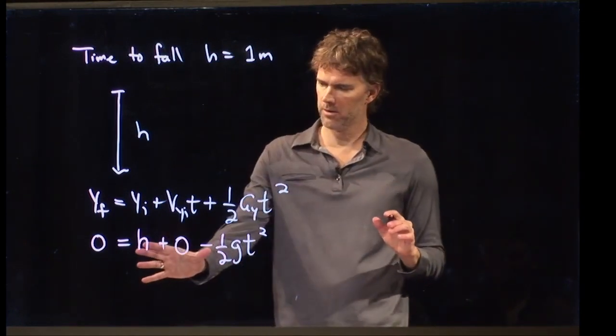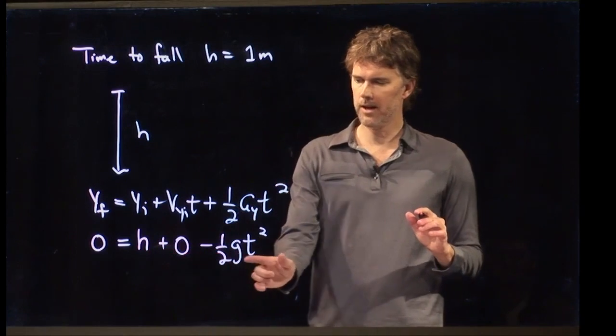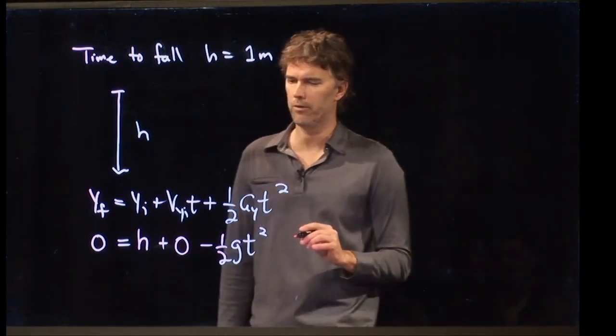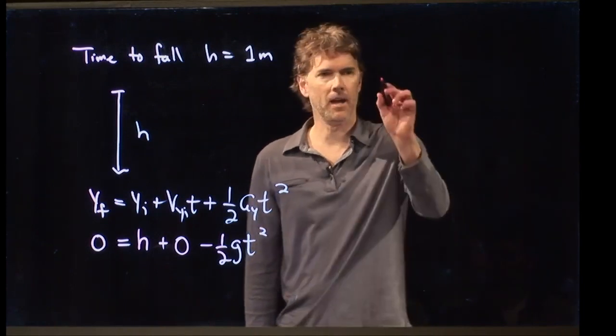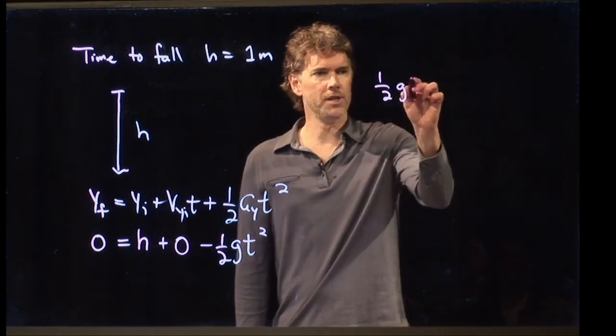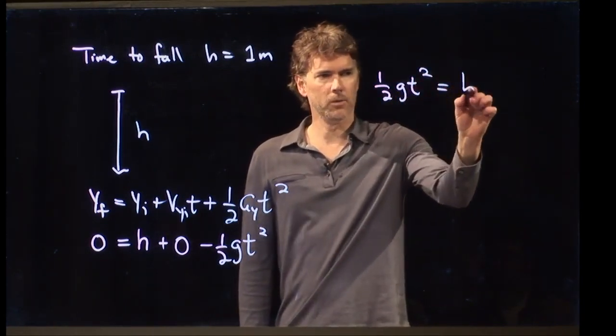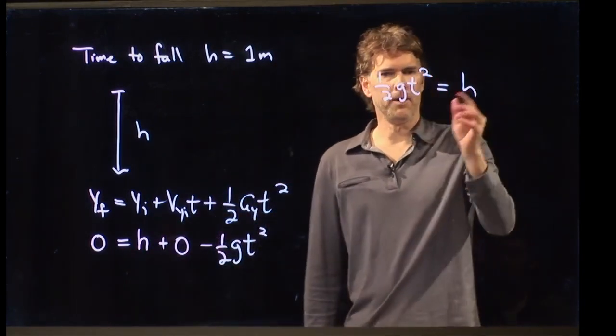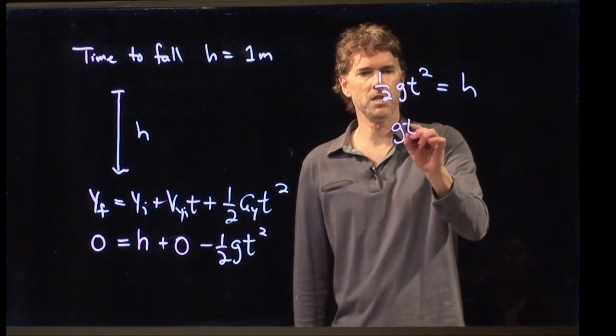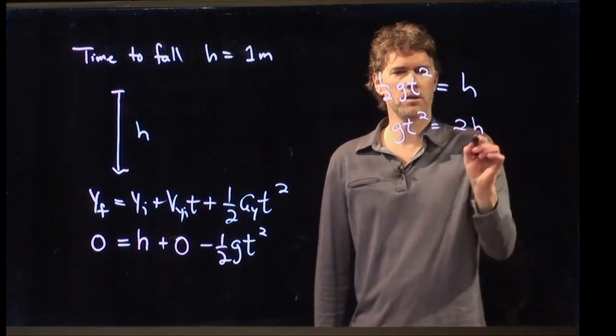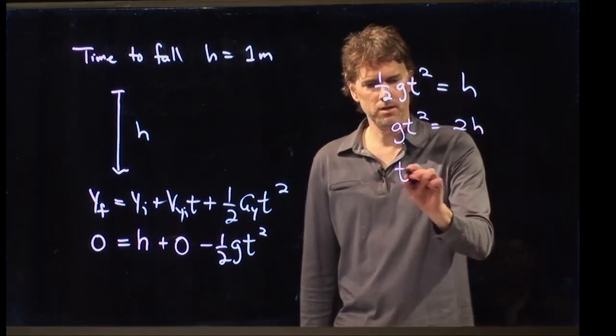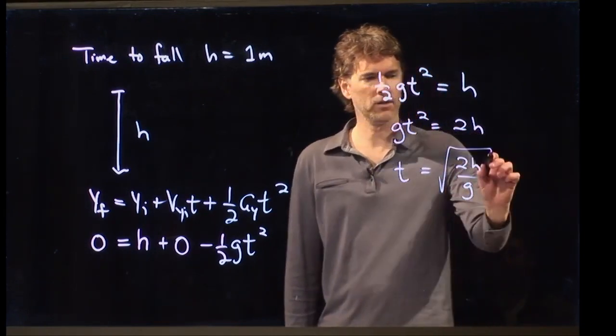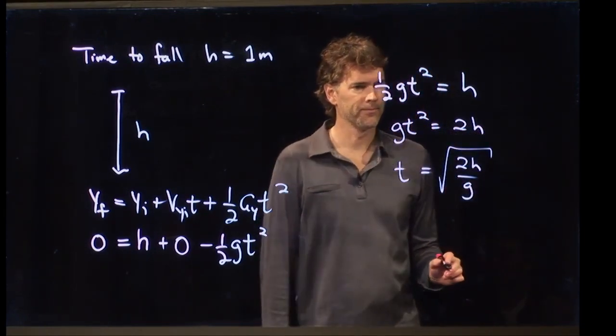And now, look. We have one equation. And the only unknown in there is t. And so, we can solve this very quickly for t. I get one half gt squared equals h. I just move that over to the other side. And now, I multiply by 2. So, I get gt squared equals 2h. And then, I divide by g. And I get t equals 2h over g. And I take the square root.